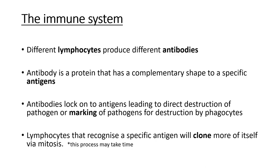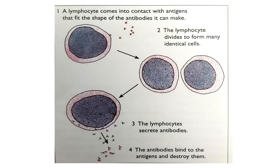As covered in transport in animals, the two types of white blood cells are lymphocytes and phagocytes. A lymphocyte comes into contact with antigens that fit the shape of the antibodies it can make. The lymphocyte then divides to form identical cells, after which it secretes antibodies that bind to the antigens of the virus and destroy them. Lymphocytes differ from phagocytes in that lymphocytes are the ones that produce antibodies.